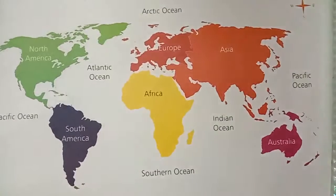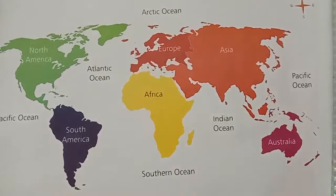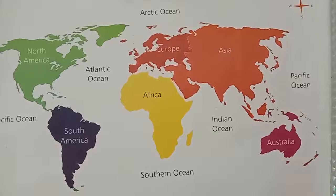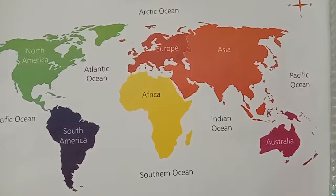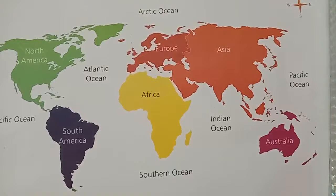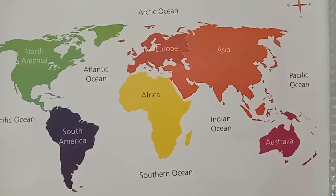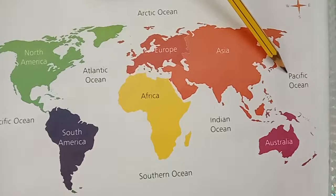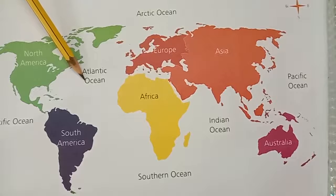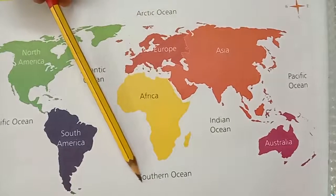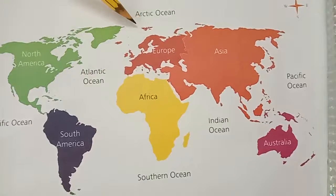Now I am going to tell you about the ocean. Water bodies cover three-fourths of the earth's surface. They are of different sizes and shapes. An ocean is the largest body of salt water that surrounds a continent. There are five oceans: Pacific Ocean, Atlantic Ocean, Indian Ocean, Southern or Antarctic Ocean, and Arctic Ocean.